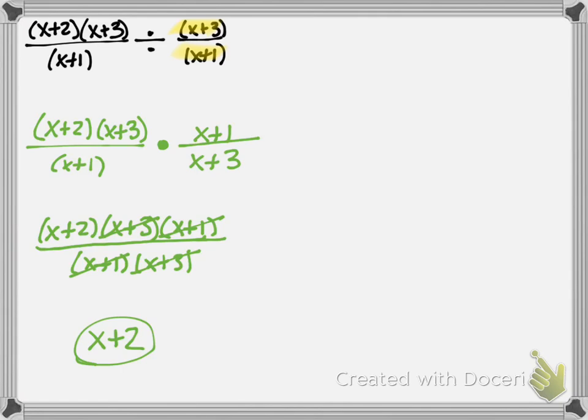So we flipped our second fraction and then just multiplied. We had (x+3) over (x+1), flipped it to (x+1) over (x+3), and changed the division symbol to multiplication.